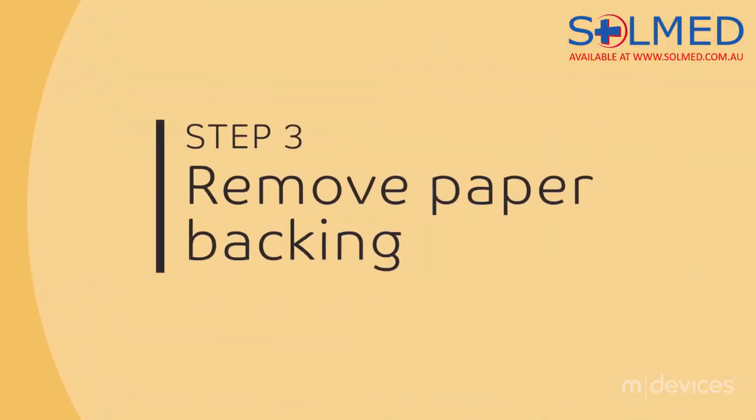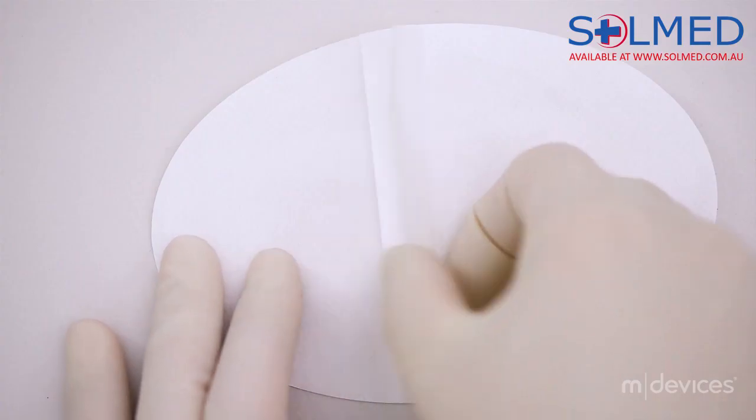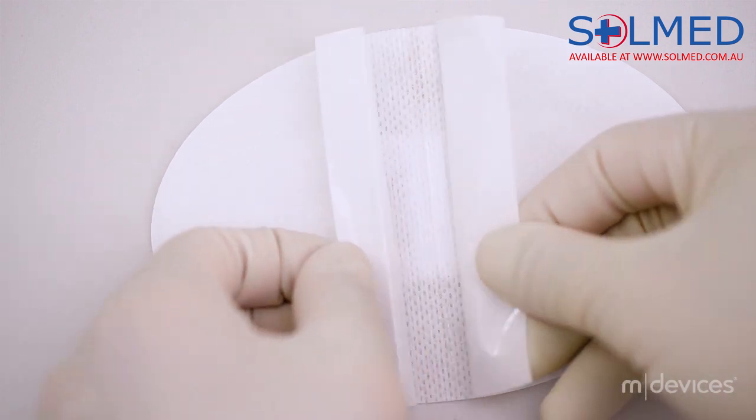Step 3: Using the two tabs of the paper backing, peel paper backing to expose the adhesive dressing.